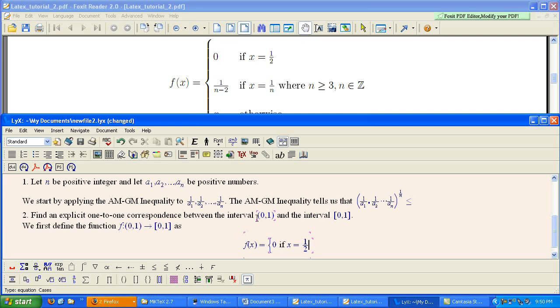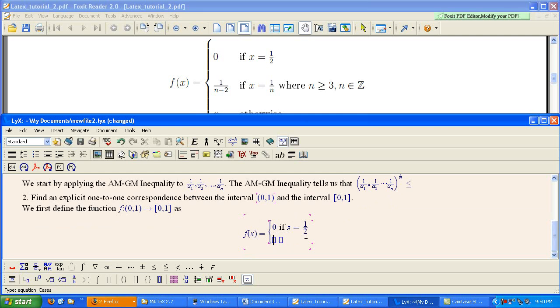So, now we need another line, right? The way that you do this, the way you get to another line is to hit Control-Enter. That gives you another line to add another case for your piecewise function. So, we need another fraction. Again, we're going to do mbox for text.